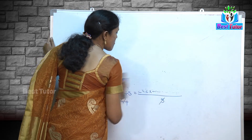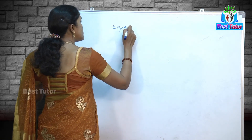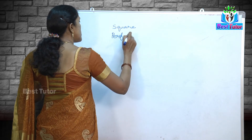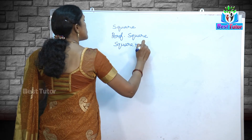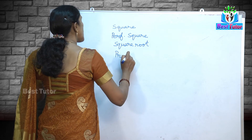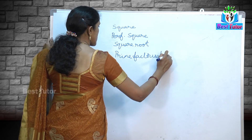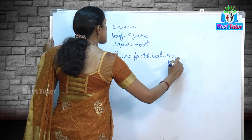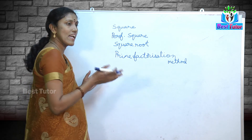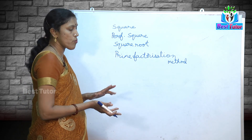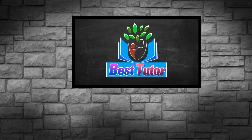So in this video we have learnt the following: what is the square of a number, what is a perfect square, what is the square root of a number, how to find the square root of a given number using the prime factorization method, and how to find the least number with which a given number must be multiplied or divided to make it a perfect square. Thank you.